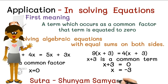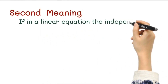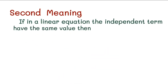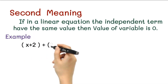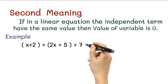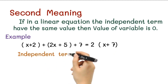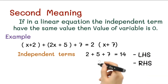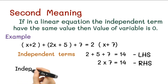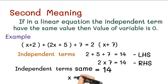The second meaning of this sutra: if in a linear equation the independent terms on both sides have the same value, then the value of the variable is zero. Example: x + 2 + 2x + 5 + 7 = 2(x + 7). The independent terms on the LHS: 2 + 5 + 7 = 14. On the RHS: 2 × 7 = 14. Since both sides are equal at 14, we equate the variable to 0, so x = 0.